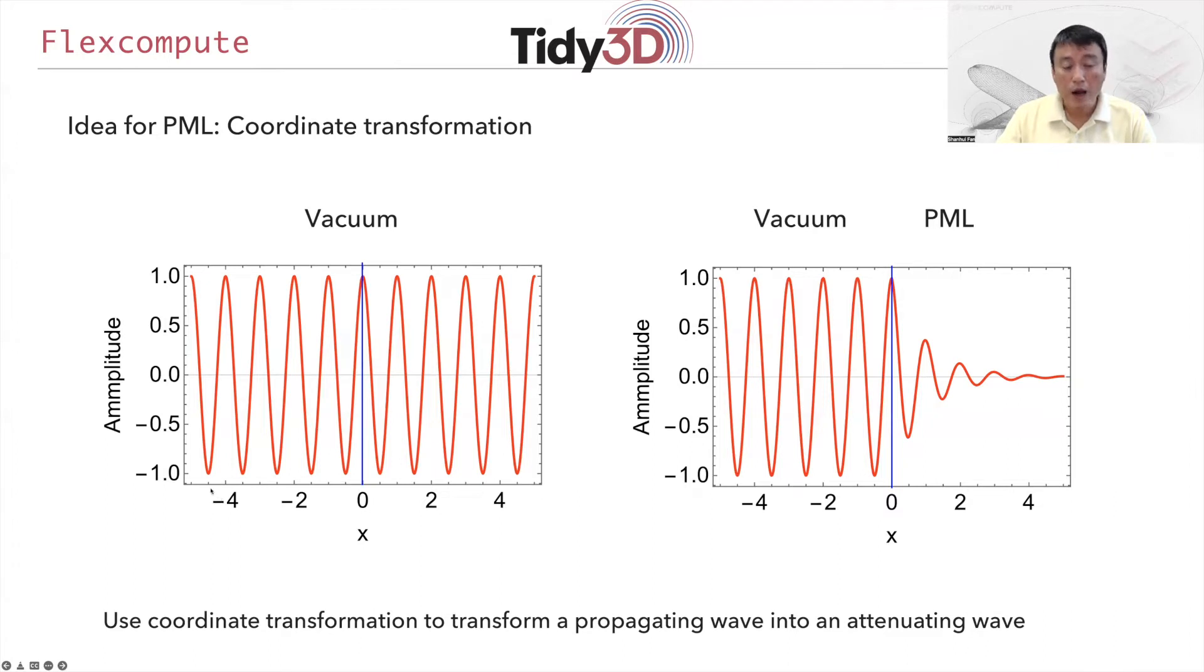One way to present the PML concept is through coordinate transformation. Imagine that you have a wave propagating in vacuum along the positive x direction. If you take a snapshot at a given time, you see a sinusoidal wave pattern extending from minus infinity to infinity. What you would like to do in PML is to put a PML layer, for example at x greater than zero, and this accomplishes a coordinate transformation such that you transform the plane wave as was originally on the right side of the vacuum region into an exponentially decaying wave and therefore it is attenuated away.